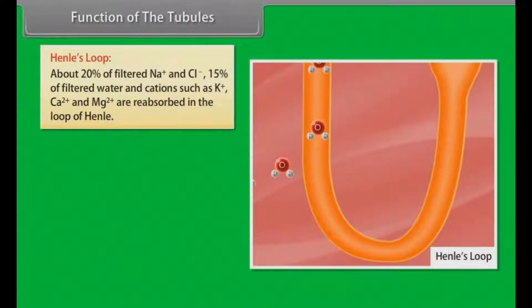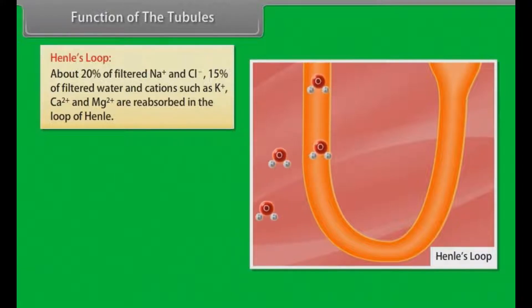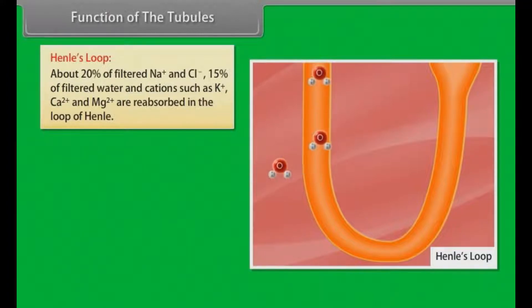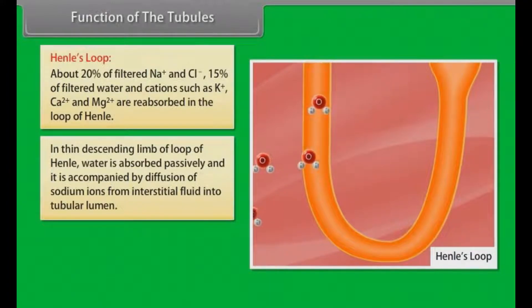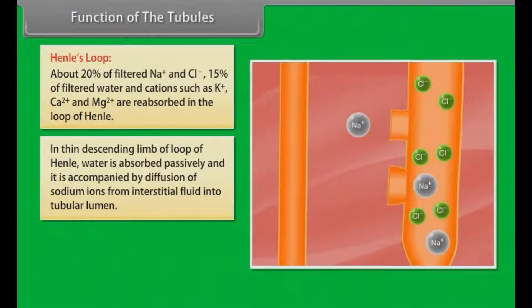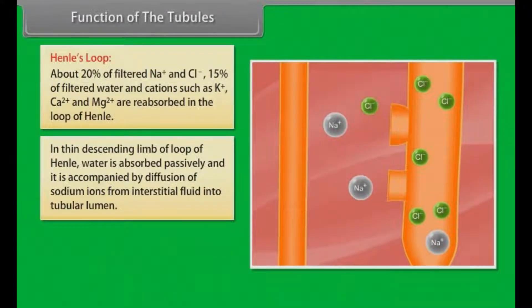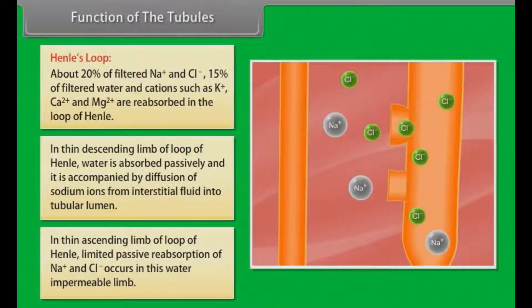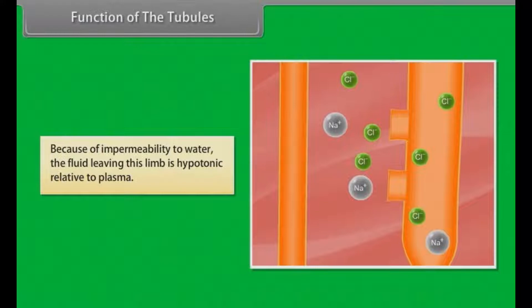Function of Henle's Loop. About 20% of the filtered Na+ and Cl-, 15% of filtered water, and cations such as K+, Ca2+ and Mg2+ are reabsorbed in the loop of Henle. In the thin descending limb, water is absorbed passively, accompanied by diffusion of sodium ions from the interstitial fluid into the tubular lumen. In the thin ascending limb, limited passive reabsorption of Na+ and Cl- occurs; because of its impermeability to water, the fluid leaving this limb is hypotonic relative to plasma.